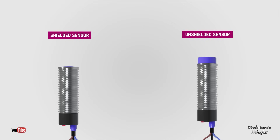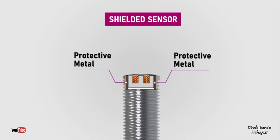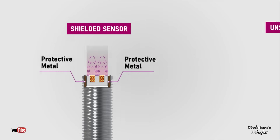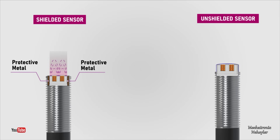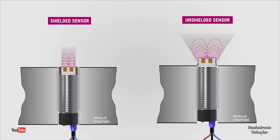Inductive sensors are available in many different configurations. They can be shielded or unshielded. A sensor is shielded if its inner coil has a metallic shield. This shield is cylindrical in shape and covers the entire contour of the sensor coil, limiting detection only to the front of the sensor. The installation of a shielded sensor can be flush — the face of the sensor is flush with the metal structure where it is installed — since the metal structure does not affect its operation.